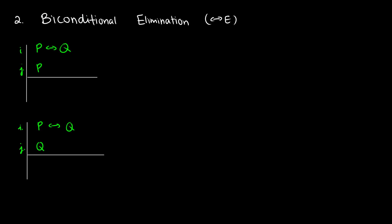Elimination is a little bit more straightforward. If P is the same as Q, then if we have P, we are able to get Q out of it. This is just like modus ponens in both directions. So we have P arrow Q and Q arrow P — therefore if we have P, we get Q. Same thing with the bottom one: P if and only if Q, we have Q, well therefore we have P. So both of these: I and J gives us K, and this was biconditional elimination.